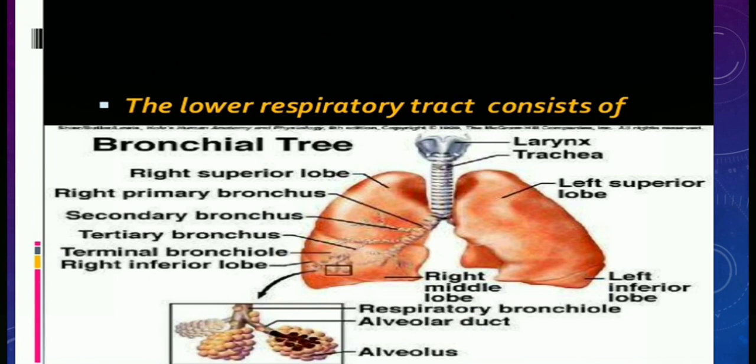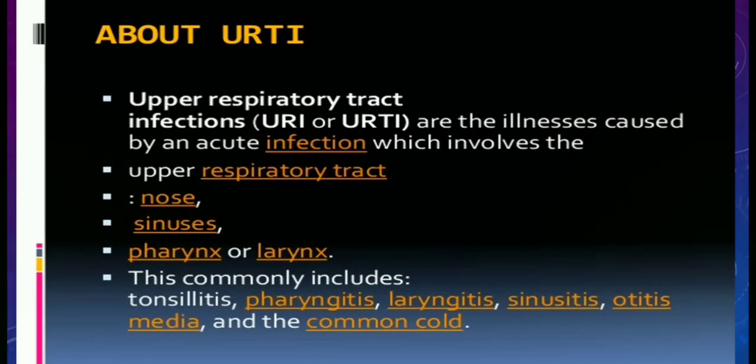The lower respiratory tract includes the larynx, trachea, lobes of lungs, and bronchi. Upper respiratory tract infections are illnesses caused by acute infection involving the upper respiratory tract structures: nose, sinuses, pharynx, or larynx. Commonly included diseases are tonsillitis, pharyngitis, laryngitis, sinusitis, otitis media, and the common cold.